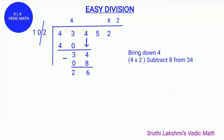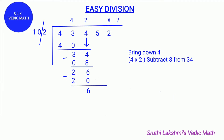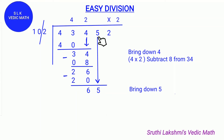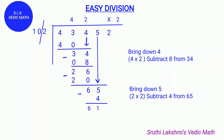Then we find how many tens can fit in 26. Two tens can fit in 26, so we write 2 in the quotient line. We do 10 times 2, which is 20, and write 20 below 26. Then subtract: 26 minus 20 gives us 6. Then we bring down 5.